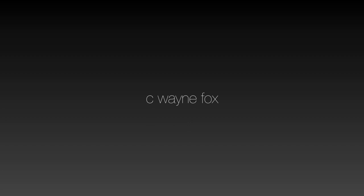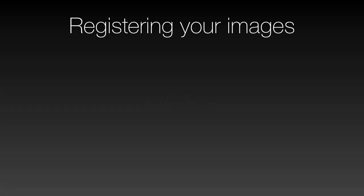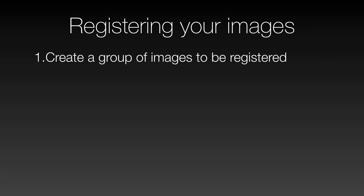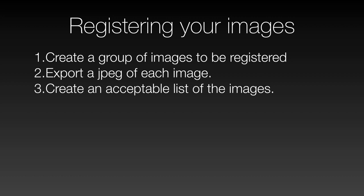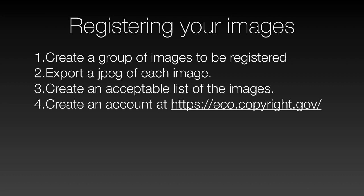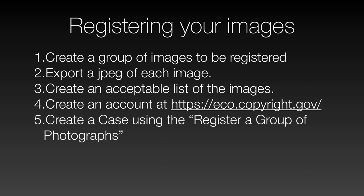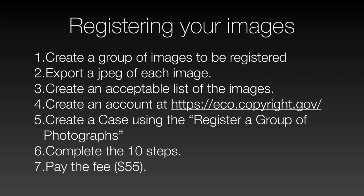First, let me quickly summarize the eight things you need to do — the eight steps required to register your images. The first thing is to create your group of images to register. You can register up to 750 at one time. You need to export or create a JPEG of each of those images, and you need to create an acceptable list of the images. You need to create an account or log onto your account at eco.copyright.gov, and there use the 'register a group of photographs' option. There are 10 steps once you create a case. Upon completing them, you pay the $55 fee, then upload the list and files.